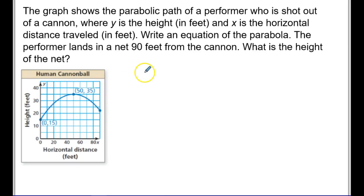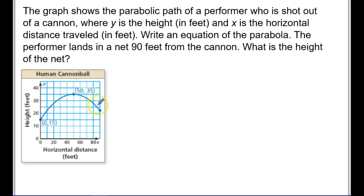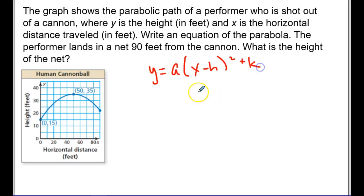The graph shows the parabolic path of a performer shot out of a cannon, where y is the height in feet and x is the horizontal distance in feet from the cannon. We need to write an equation of the parabola. The cannon starts at 15 feet off the ground, and we're given the vertex. Since I have the vertex, I'll use vertex form: y = a(x − h)² + k. The things I need are a, h, and k.